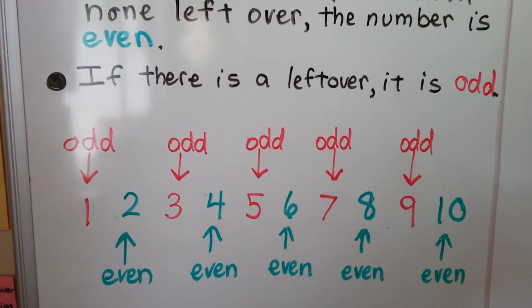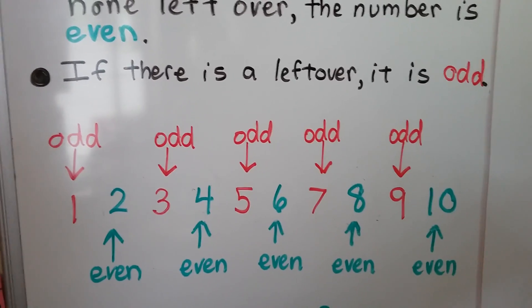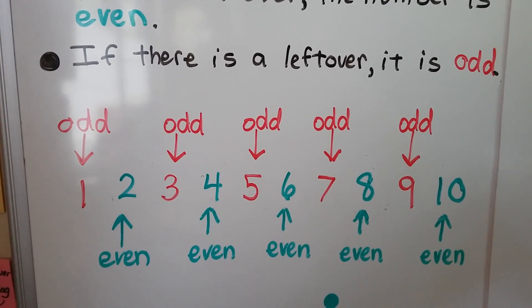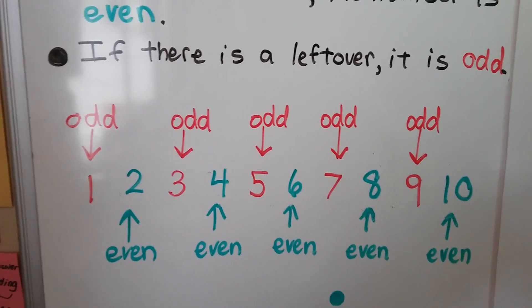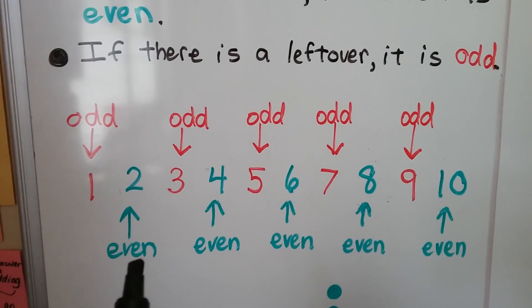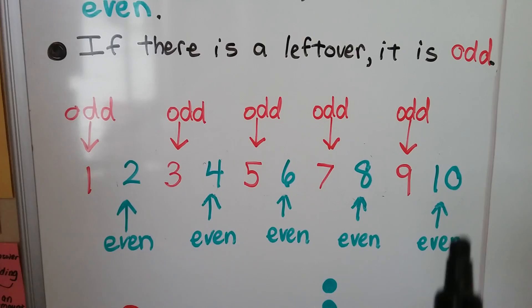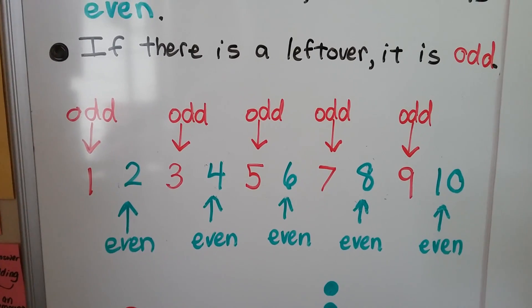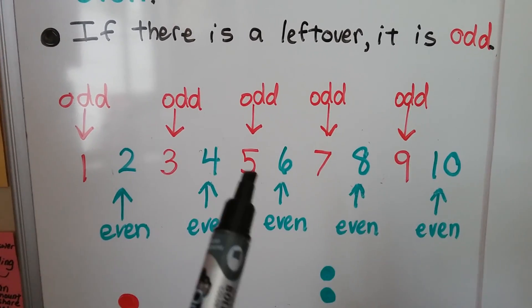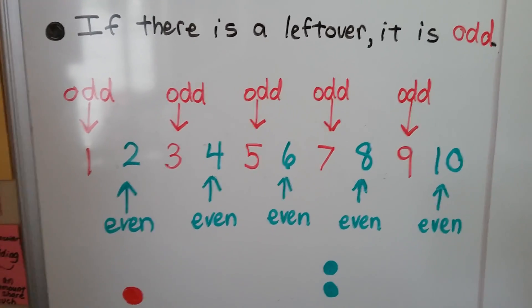Here I've got numbers 1 through 10. You can see how they take turns being odd and even. It's almost like if we skip count by twos — 2, 4, 6, 8, 10 — those are the even numbers. 1, 3, 5, 7, and 9 are odd numbers.